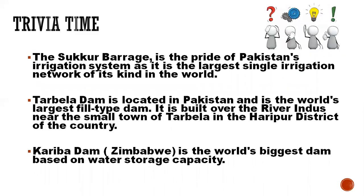Trivia time! The Sukkur Barrage is the pride of Pakistan's irrigation system as it is the largest single irrigation network of its kind in the world. Tarbela Dam is located in Pakistan and is the world's largest fill-type dam, built over River Indus near the town of Tarbela in Haripur district. Kariba Dam is the world's largest dam based on water storage capacity.